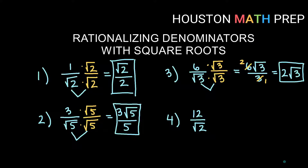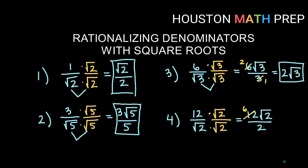For number four, 12 divided by root two: multiply by square root two on top and bottom. Outside and inside numbers must stay separate, so the numerator becomes 12 root two. Root two times root two gives us two on the bottom. Thinking of 12 over two as a fraction, you can reduce both by two to get six on top and one on the bottom, giving us six root two.